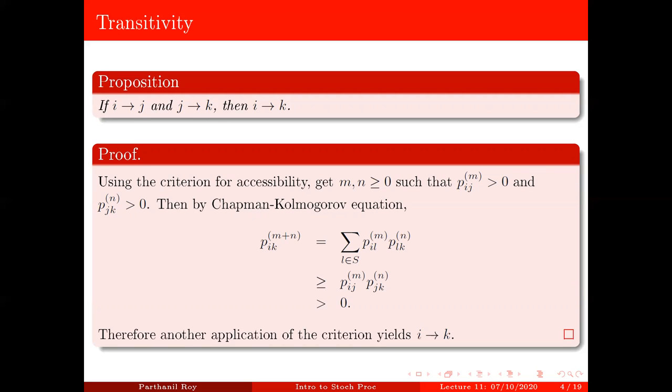Therefore, by using the criteria of accessibility once more, we get that i leads to k. It's a very easy proof, as we can see. It just uses this criteria of accessibility and Chapman-Kolmogorov. That's all.